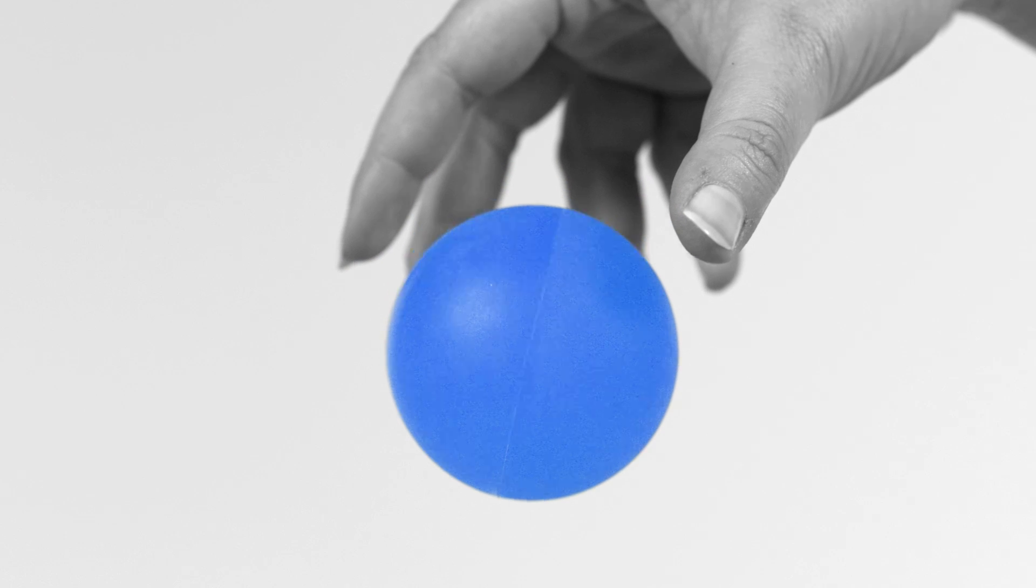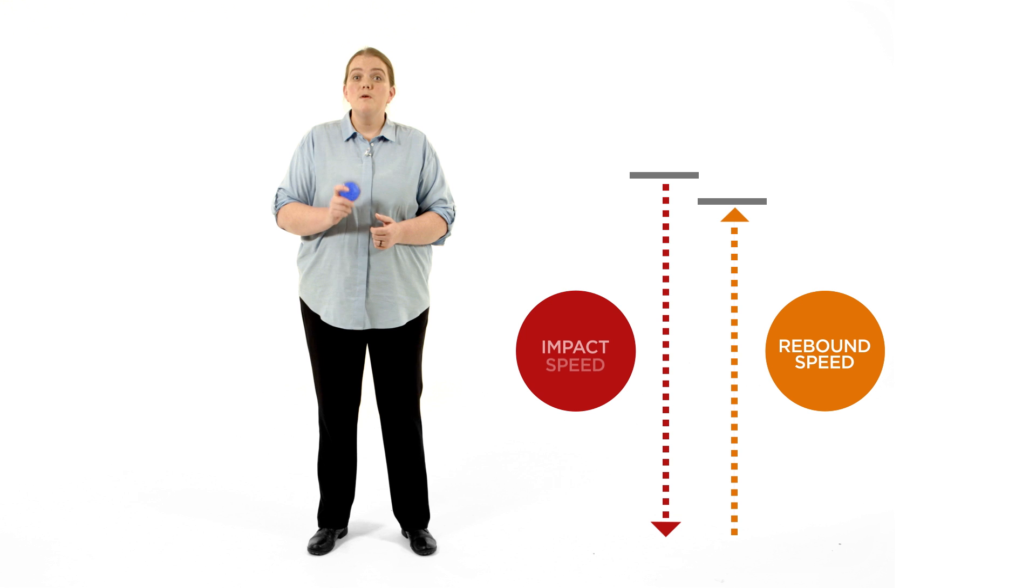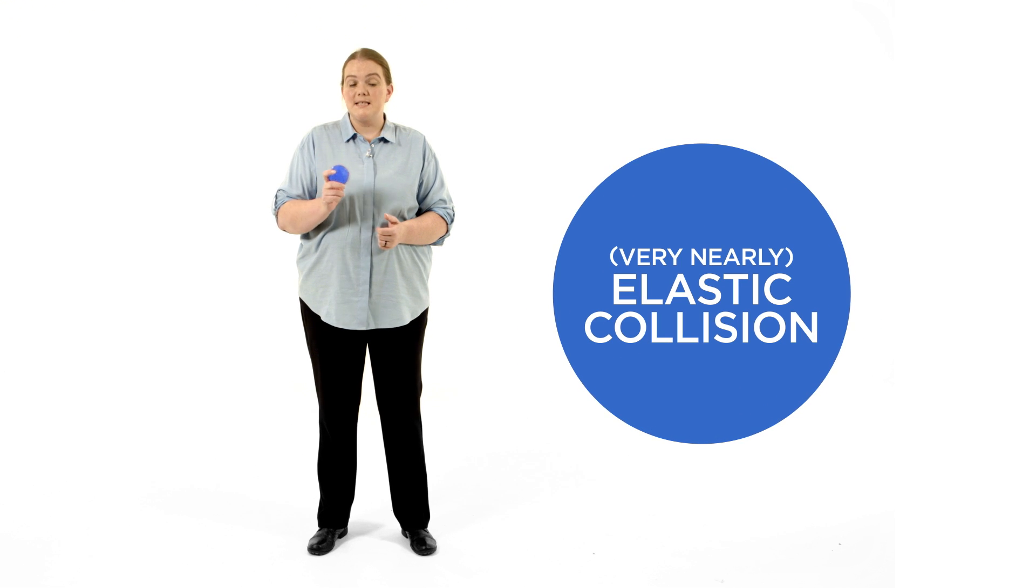If I drop this rubber ball onto a hard surface, we can see that it rebounds up to almost the same height from which I released it. This means that its speed of rebound was almost the same as its impact speed. It lost hardly any kinetic energy during the collision. This is an example of a collision that is very nearly elastic.